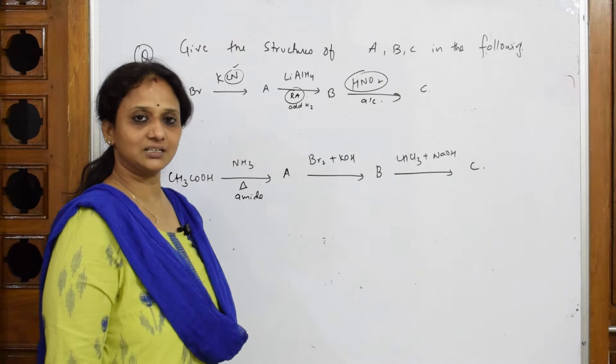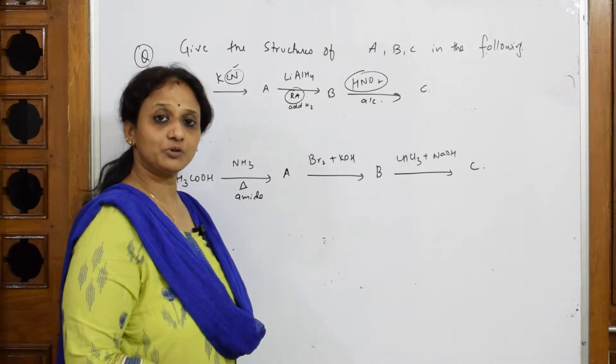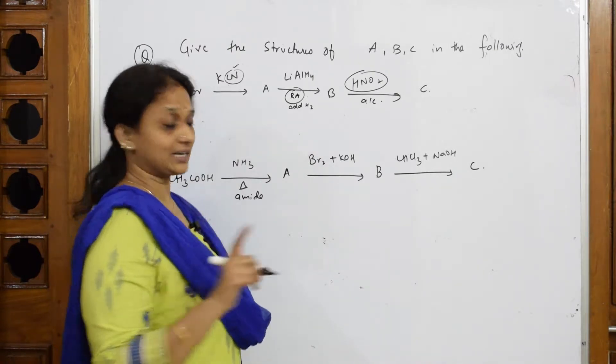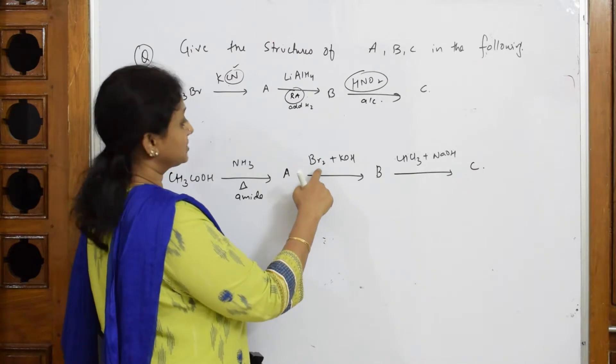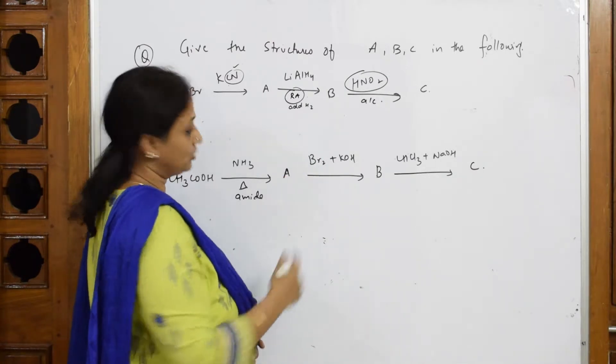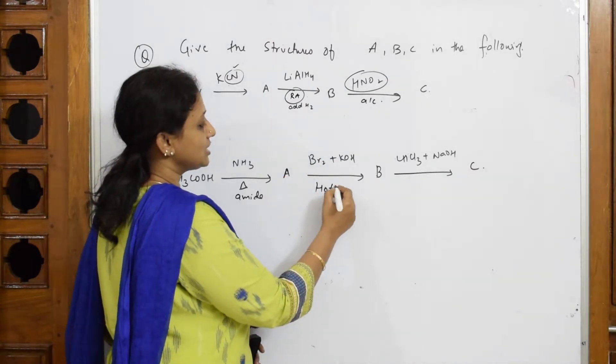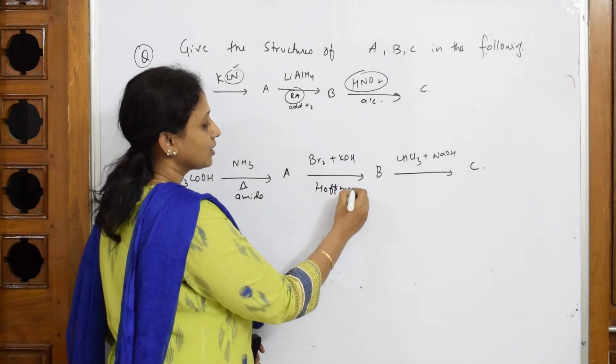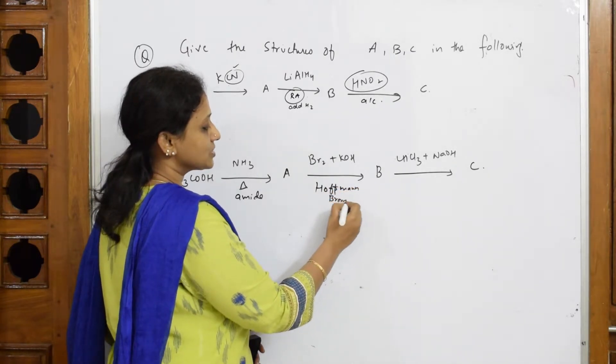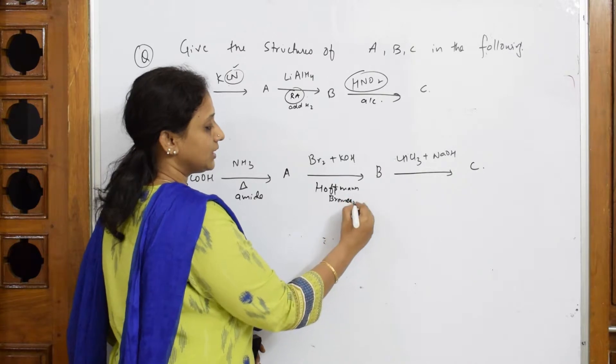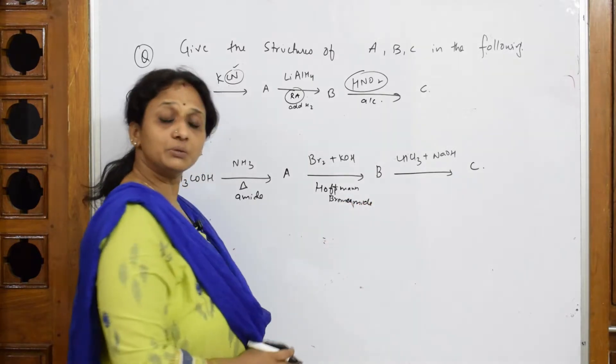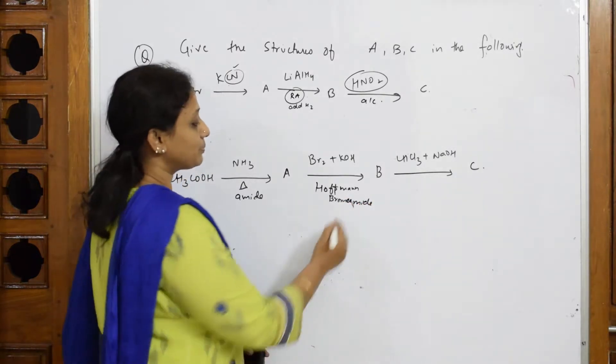Next, bromine in KOH - where did we do this? We did just ten minutes before. Hoffmann bromomide reaction, isn't it? This Br2 and KOH, these reagents are Hoffmann bromomide reaction reagents.